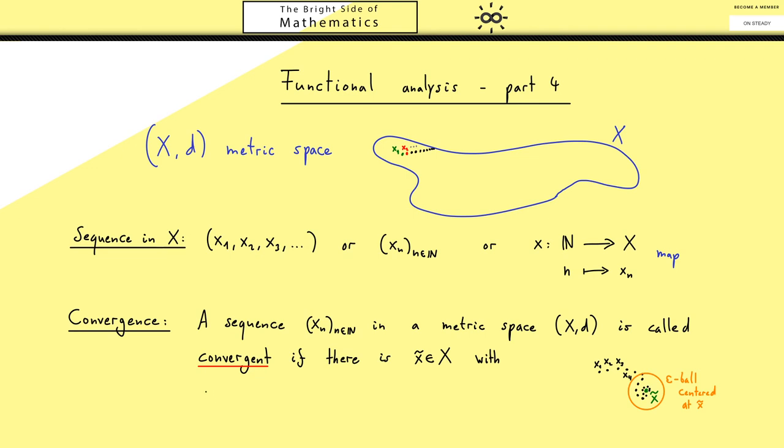More exactly this means we find an index such that members with a bigger index lie inside the epsilon ball. Formally this reads then for all epsilon greater 0 there exists an index capital N such that all the other indices greater or equal this capital N fulfill that the distance between xn and our limit point x tilde is less than epsilon.